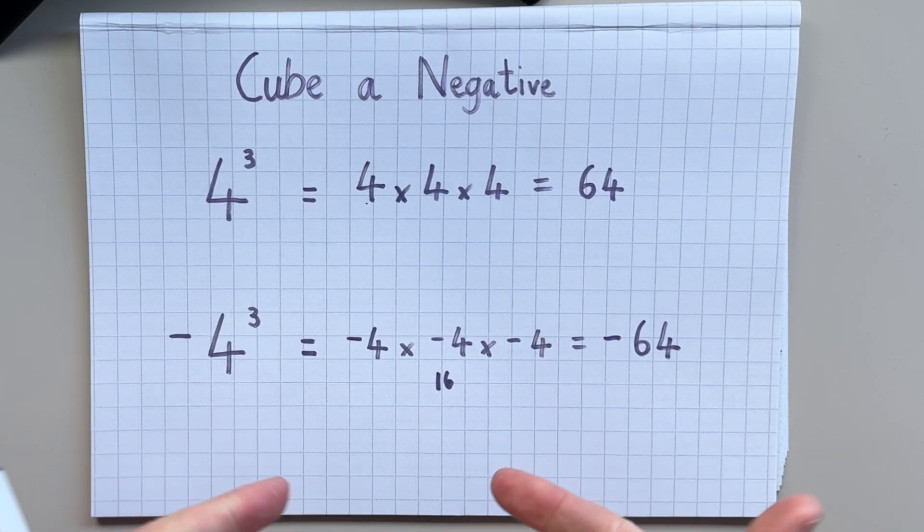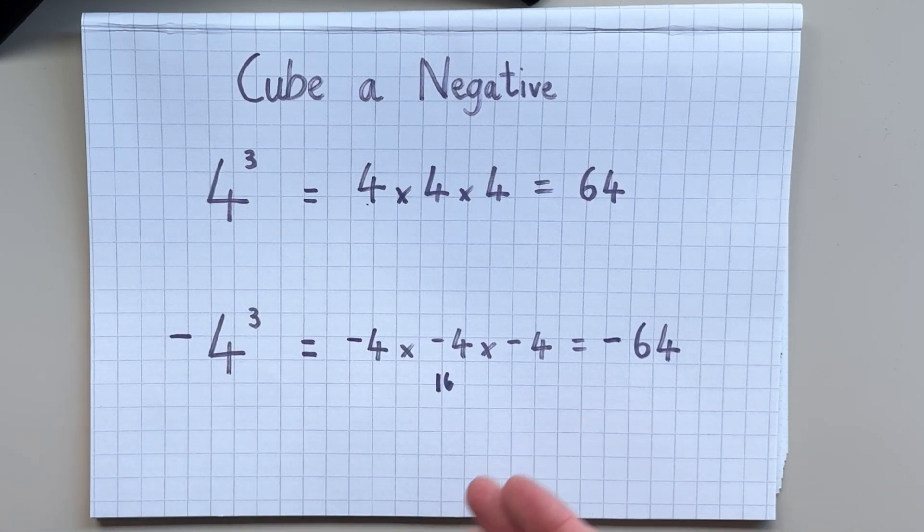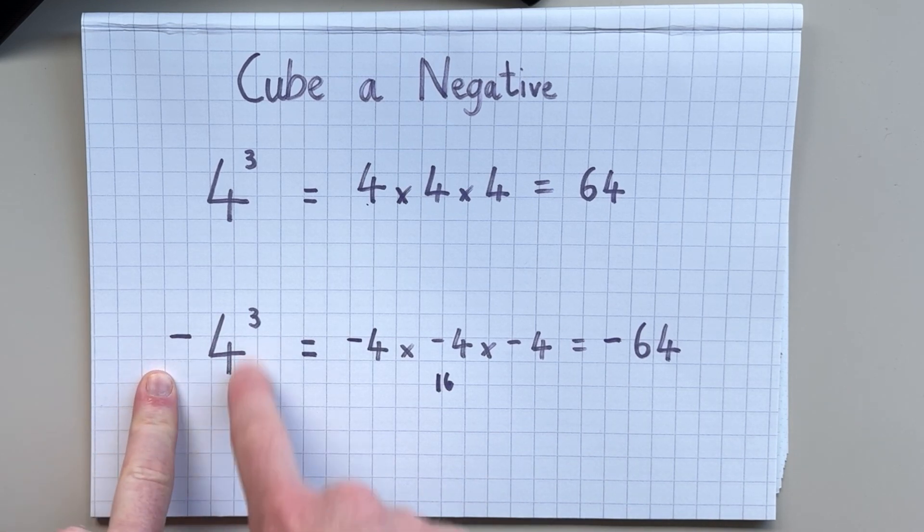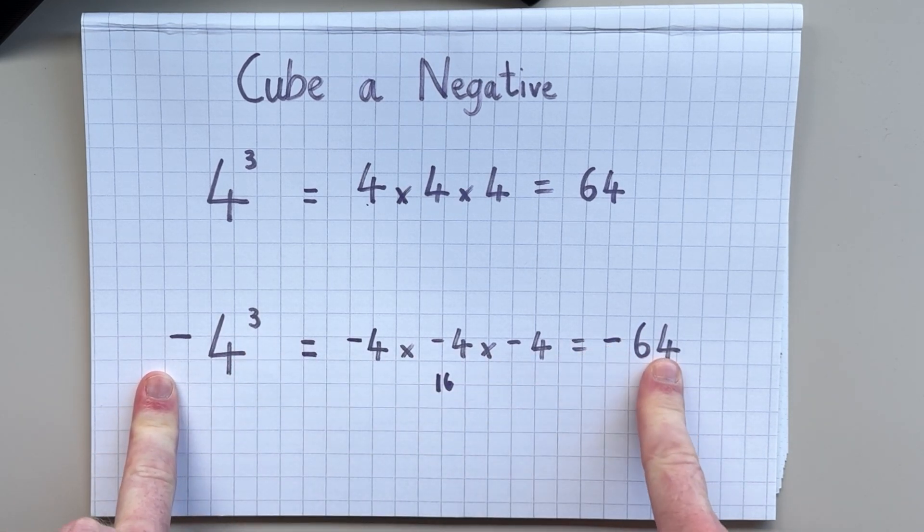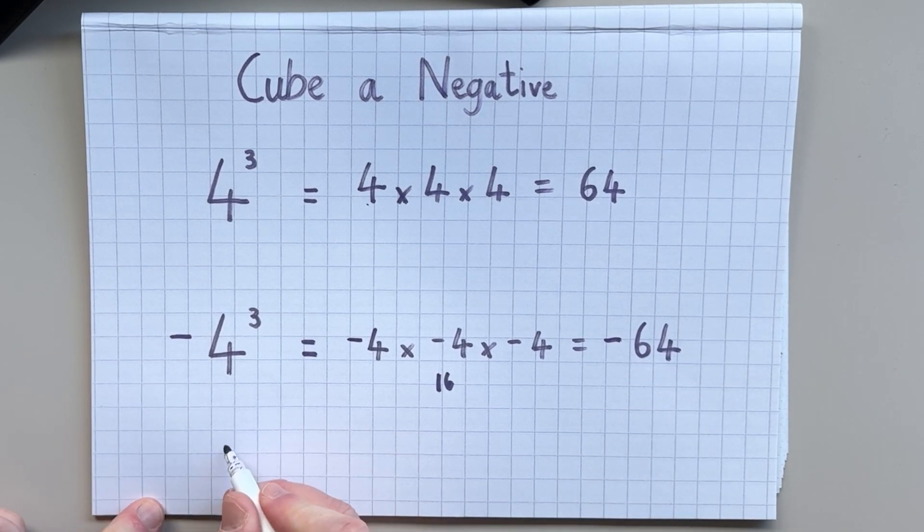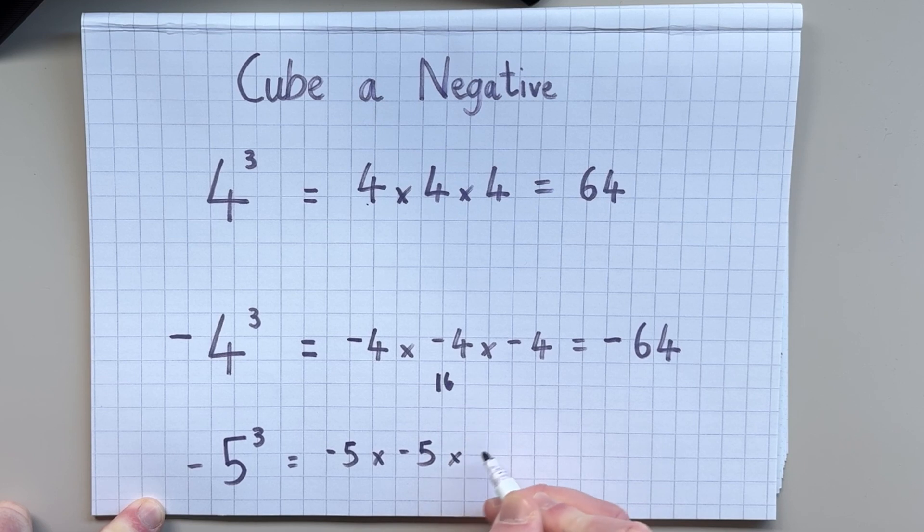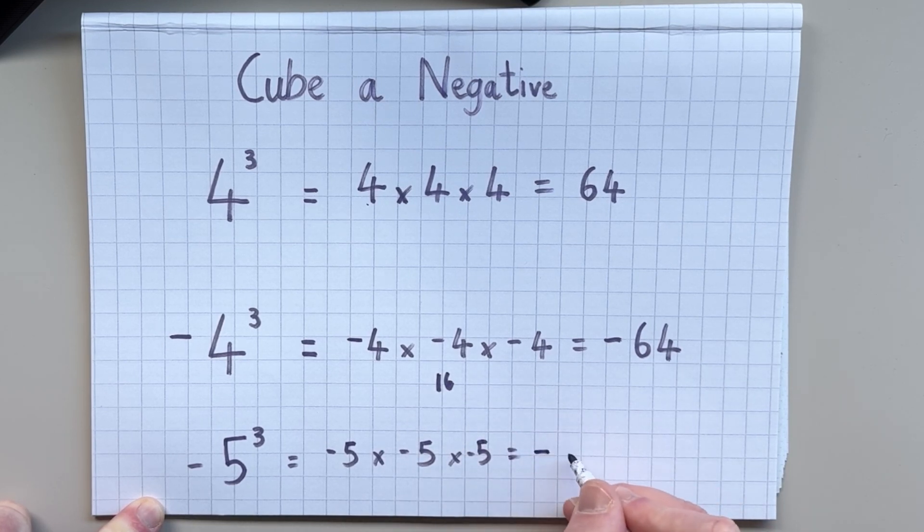So that is completely different to when we square a negative number. So if we have negative 5 cubed, that would be negative 5 multiplied by negative 5 multiplied by negative 5. And that would give us an answer of negative 125.